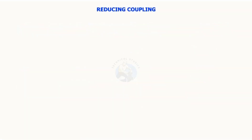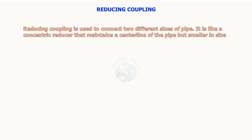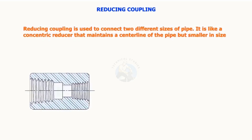Reducing coupling is used to connect two different sizes of pipes. It is like a concentric reducer that maintains a centerline of the pipe but is smaller in size.